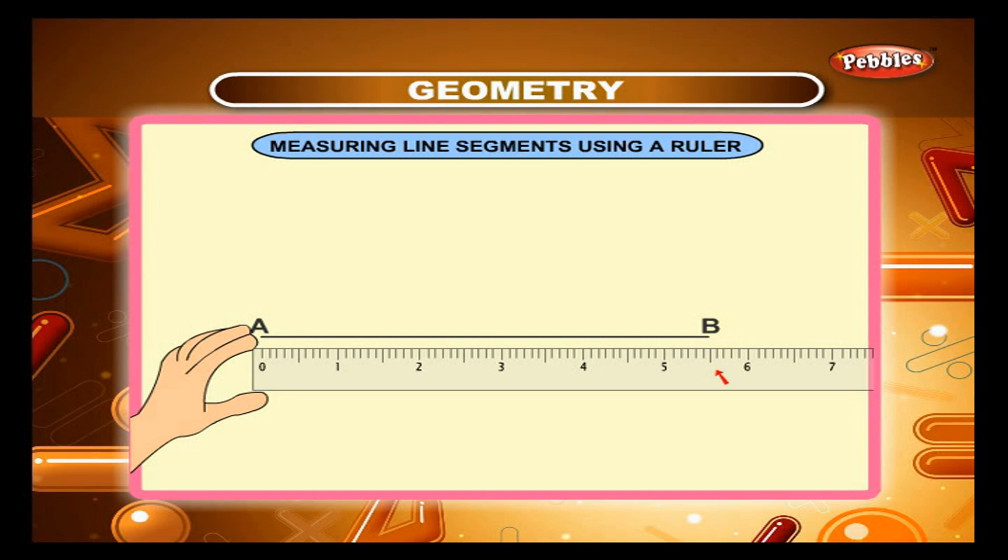This gives the length of the line segment. Line AB or segment AB is equal to 5.5 cm in the above figure.